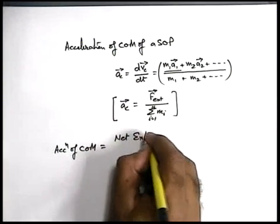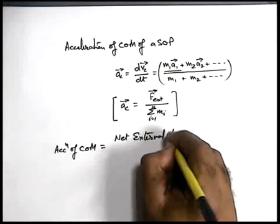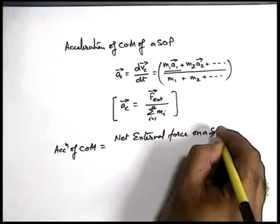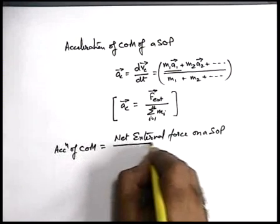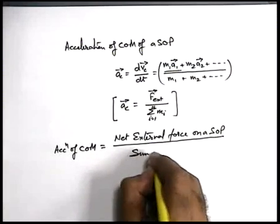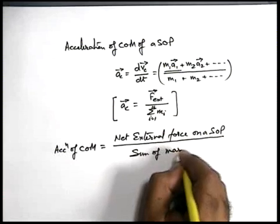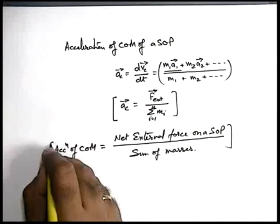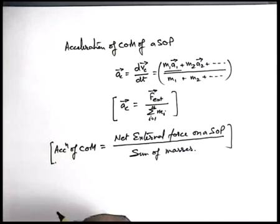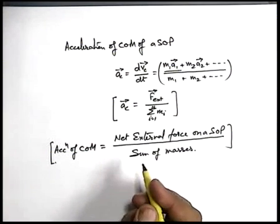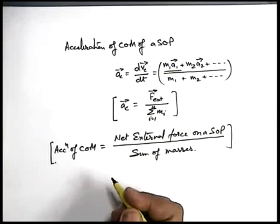This is also a very useful relation about centre of mass: acceleration of centre of mass of any system equals net external force on the system of particles divided by the sum of all the masses in the system. So be careful when calculating acceleration of centre of mass. We'll have some examples based on this in the coming sections.